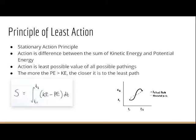Action is the least possible value of all possible pathings. The more your potential energy in the system over kinetic energy, the closer it is to the efficient path.